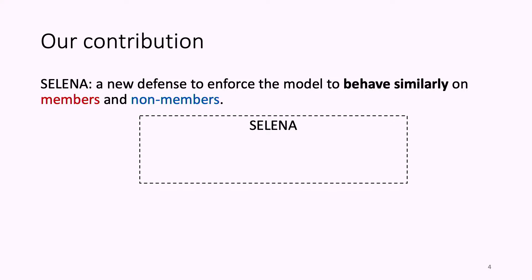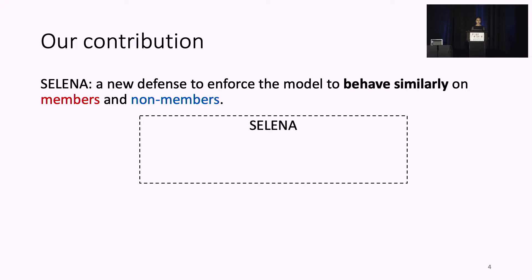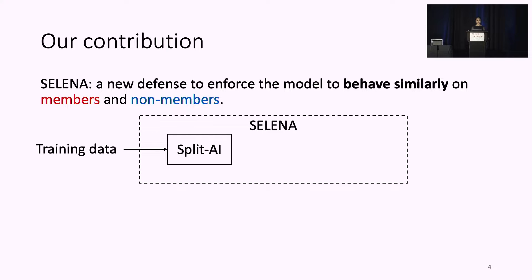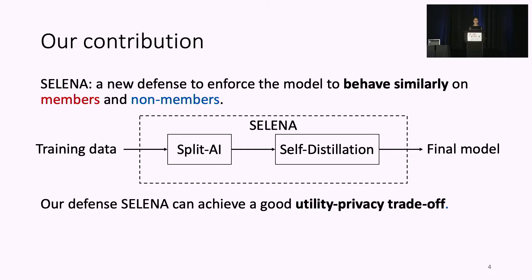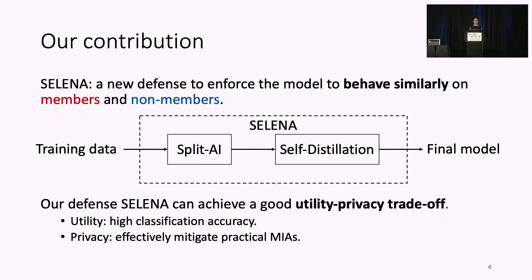In this work, we propose a new membership inference defense called Senena to enforce a model to behave similarly on members and non-members. The training data is first used to train machine learning models in our first component, Splitter-I. After that, we perform self-distillation, and after the self-distillation process we output the final protected model. The experimental results show that our defense can achieve a good utility-privacy trade-off — high classification accuracy while effectively mitigating practical membership inference attacks.